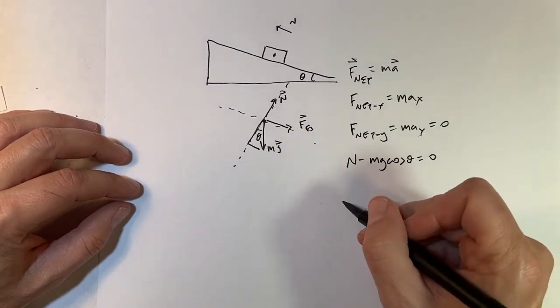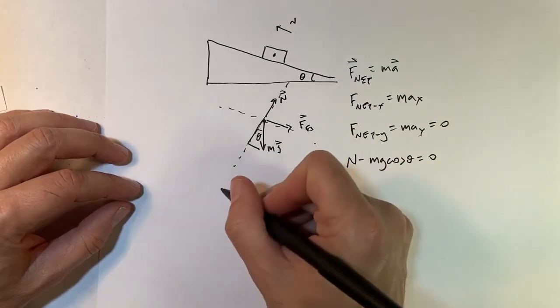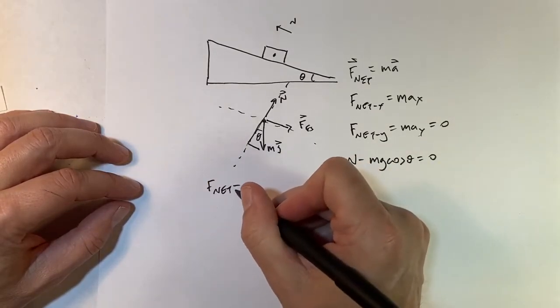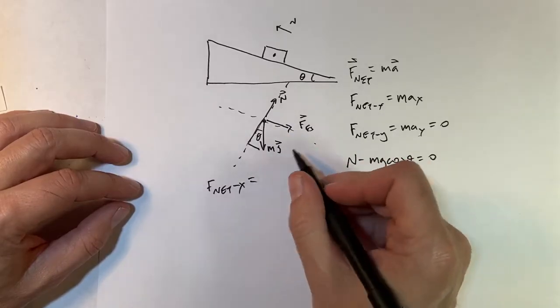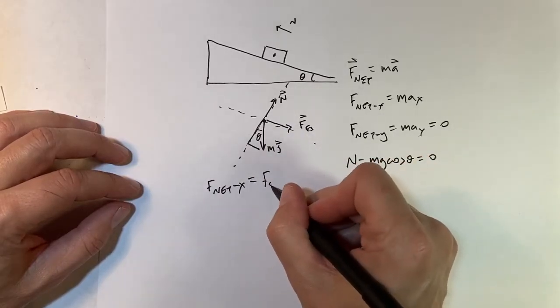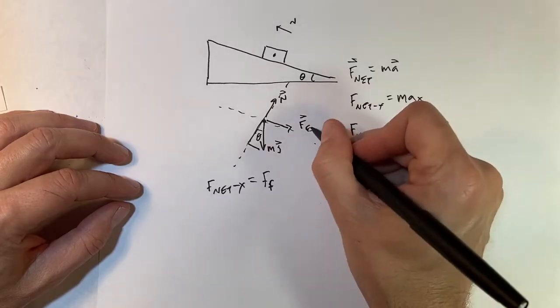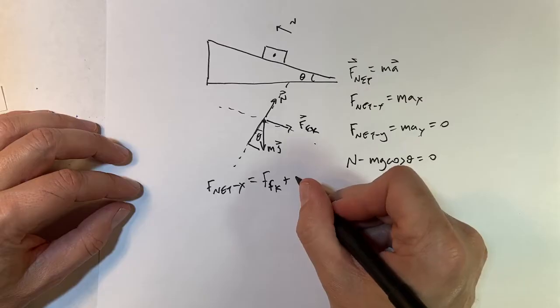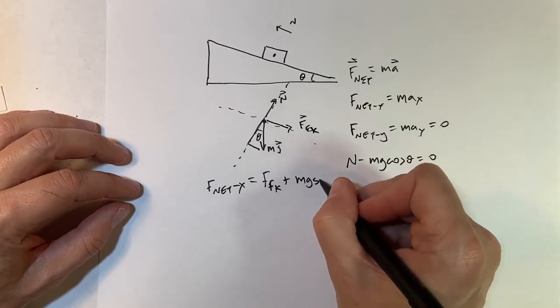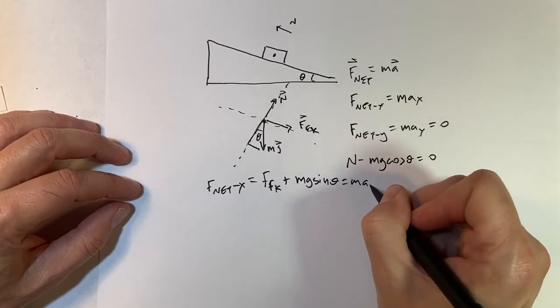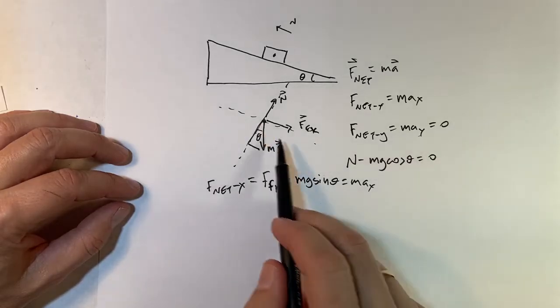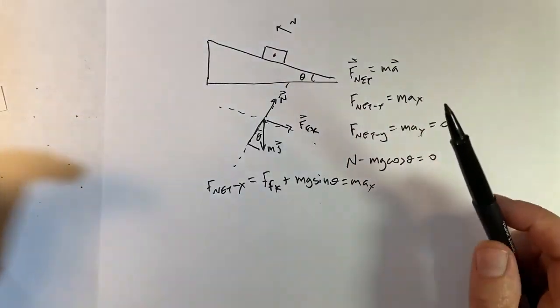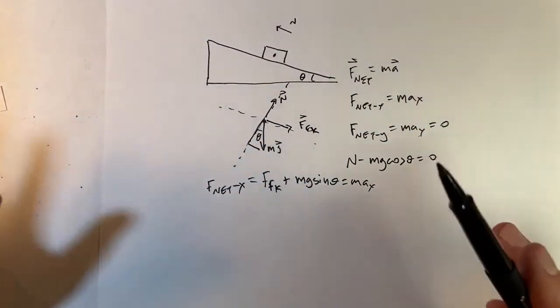Now let's do the same thing for the x direction. So I have f net x equals the frictional force. It's in the x direction. Friction, that's kinetic, not static. And then plus mg sine theta equals ma x. So both of these are pulling in that direction. It is moving up the plane, but the acceleration is down the plane. That's okay.